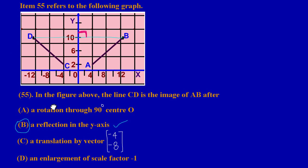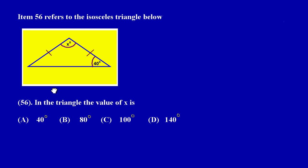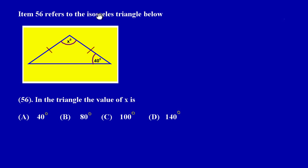Let's quickly move on to item 56. It states that item 56 refers to the isosceles triangle below, and here we have an isosceles triangle. Obviously we have two sides that are equal, hence we will have two base angles that are equal. Therefore this base angle here must be equal to 40 degrees, so I would have 40 degrees right there.